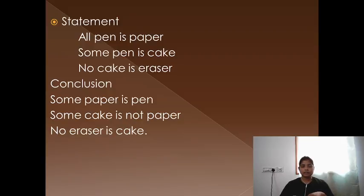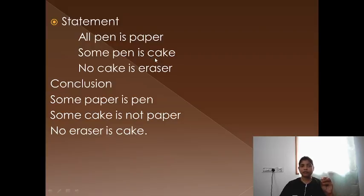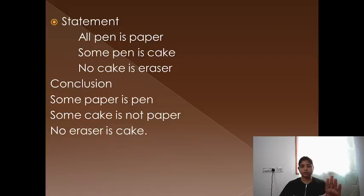In the statement it is given that all pen is paper — here pen is the subject and paper is the object. Similarly, some pen is cake — here pen is the subject and cake is the object. This is not the most important concept but it is required in further rules, which is why I am mentioning it at the beginning. This is the sample question showing how syllogism looks.